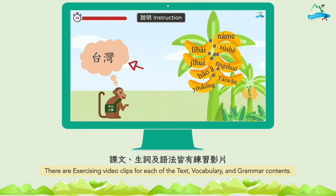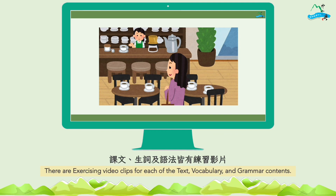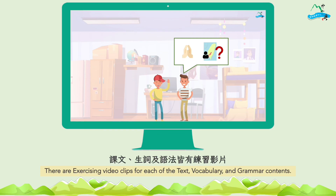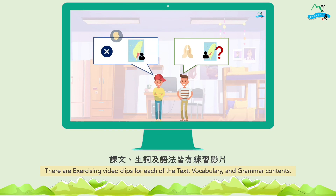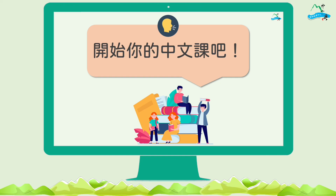现在有两个生词练习。你看看台湾在哪里？哦，在这里。懂了吗？现在我们练习，现在我是服务生，你是客人。请看图说一次课文。文哲，你是高雄人吗？看了影片以后，可以利用练习来看看是不是学会了。After watching the video, you can use the exercises to see if you understand. 现在就开始你的中文课吧！Now, let's start your Chinese lessons.